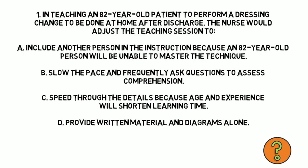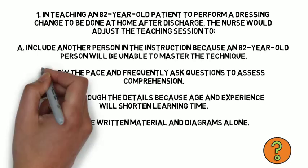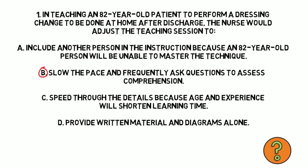Question 1. In teaching an 82-year-old patient to perform a dressing change to be done at home after discharge, the nurse would adjust the teaching session to: A) Include another person in the instruction because an 82-year-old will be unable to master the technique. B) Slow the pace and frequently ask questions to assess comprehension. C) Speed through the details because age and experience will shorten learning time. D) Provide written material and diagrams alone. The correct answer is B. Whenever you're dealing with an older client, you never want to go too fast because it takes them time to process information. You should slow the pace and ask questions to make sure they understand what you told them.